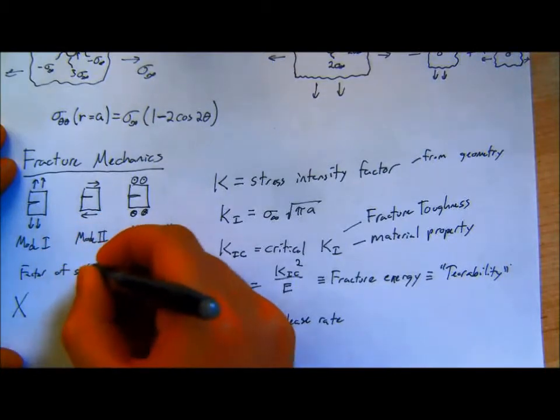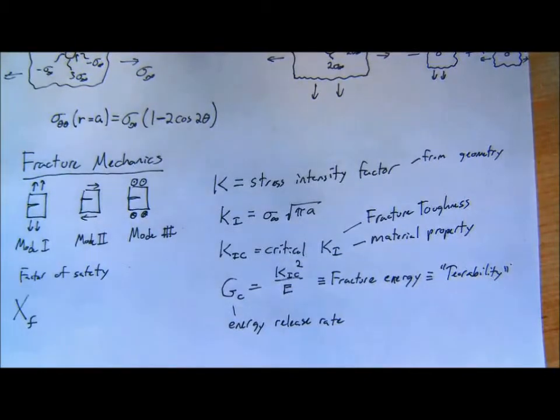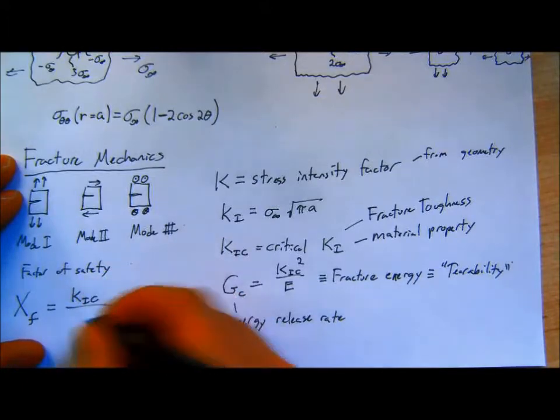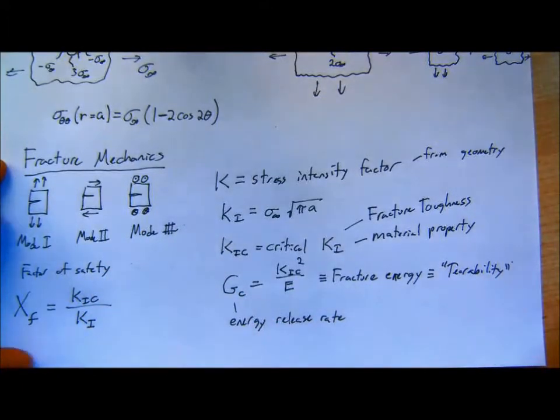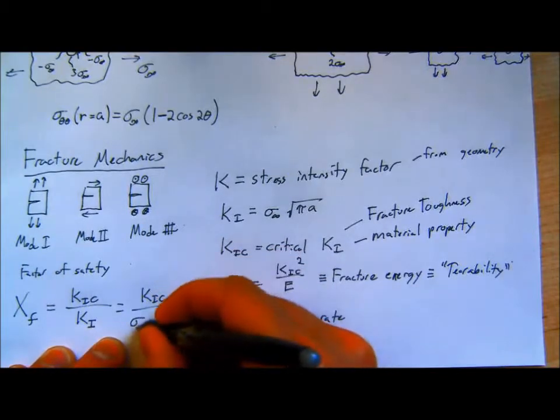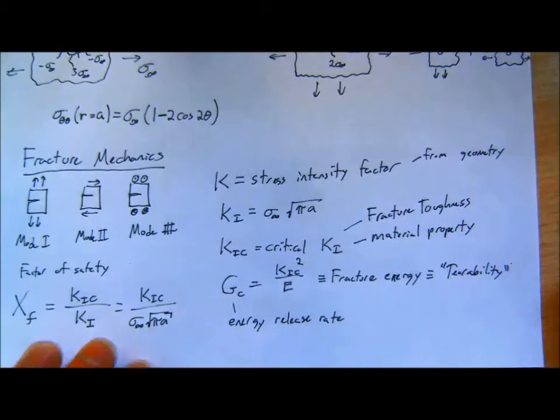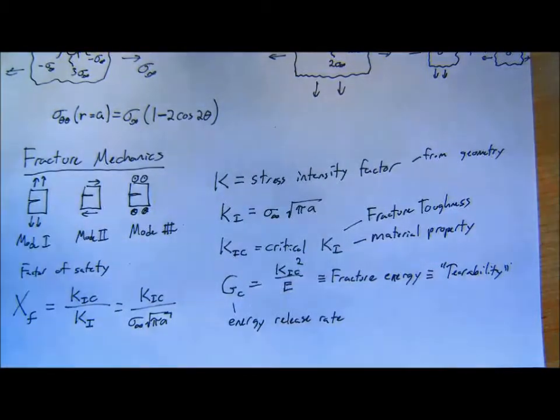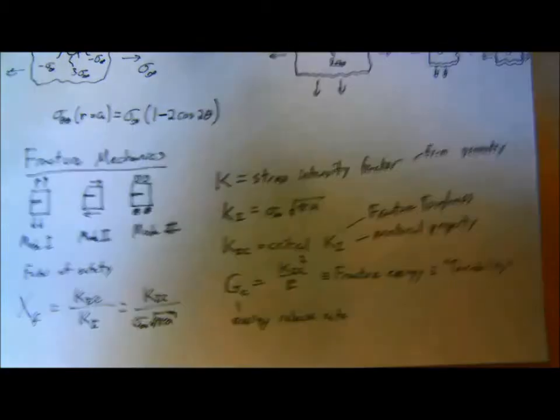One more important thing to remember is the factor of safety for fracture. So we defined it for plasticity where it was the yield stress over the applied stress. For fracture, we're specifically looking at the critical stress intensity over the stress intensity that we're actually applying. You can also say that this is KIC over sigma infinity square root pi A, where A again is the size of your crack. More fracture stuff. We're through a lot of fracture. And so there will most definitely be a fracture problem. Possibly two. Probably two.